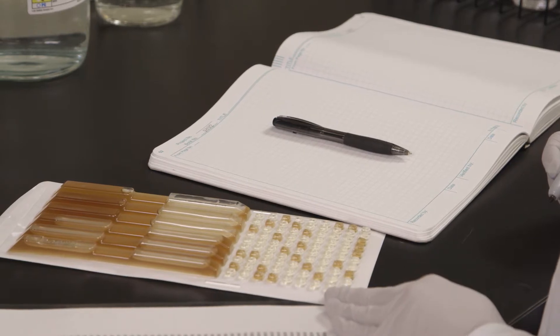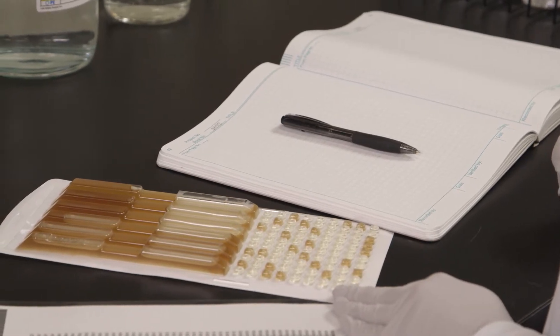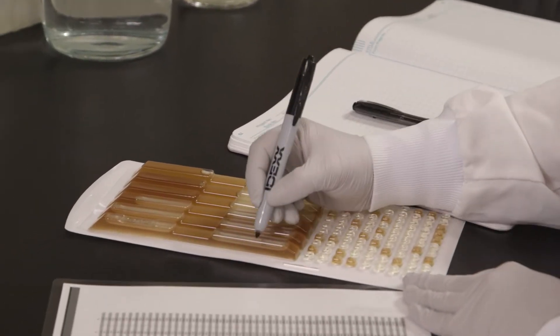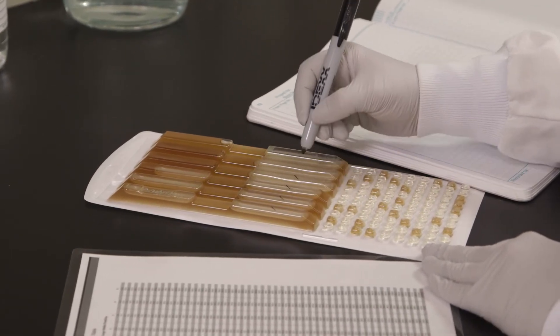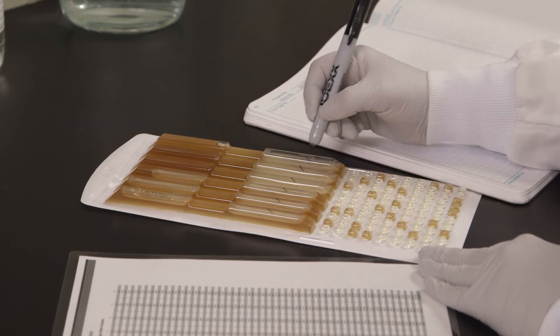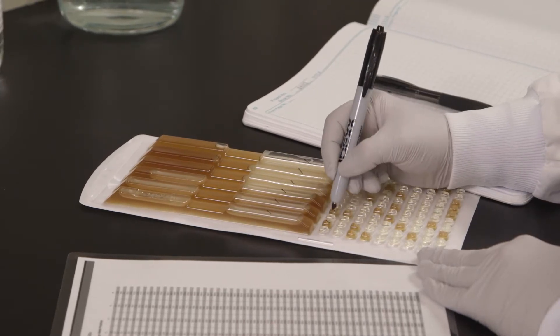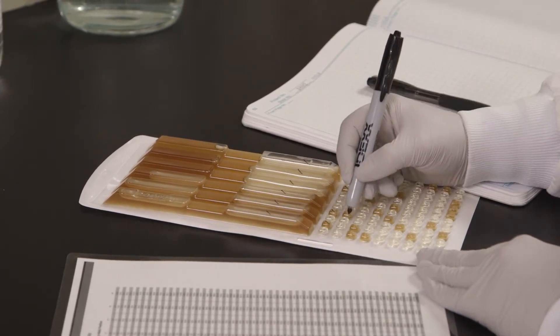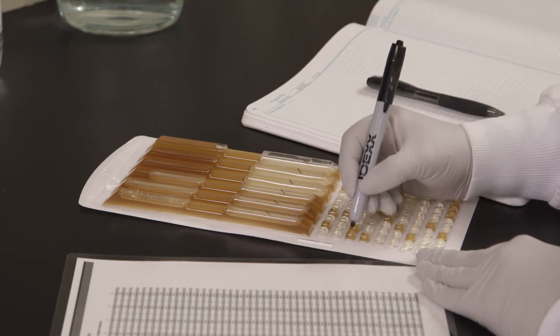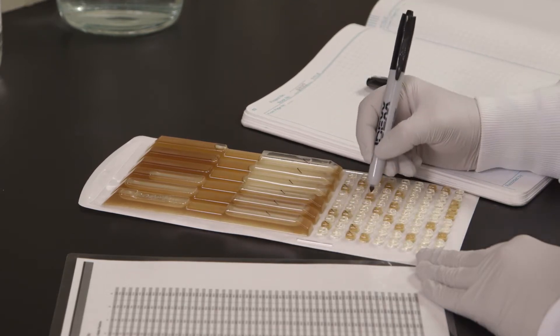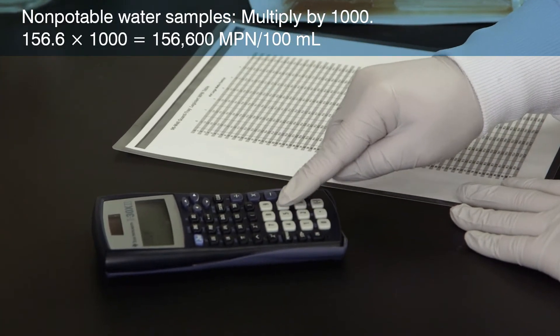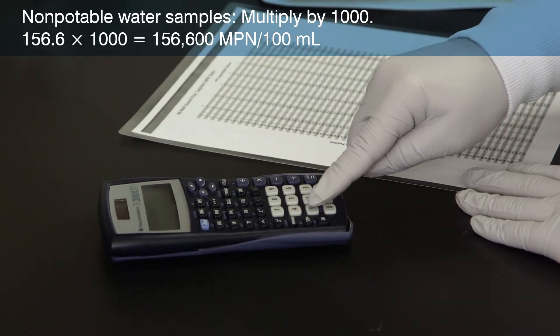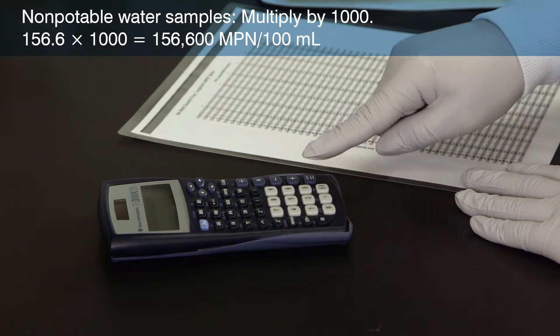After incubation, look for any indication of brown color and or turbidity greater than the negative control which indicates a positive well. Mark each brown or turbid well. Count the marked wells, and then refer to the MPN table included with the quantitray LEG-ALERT trays. For non-potable water samples, remember to multiply the MPN by 1,000 because you're using 0.1 mL of the original sample.